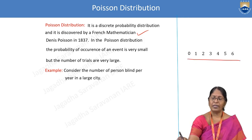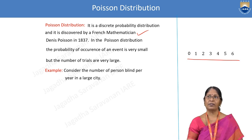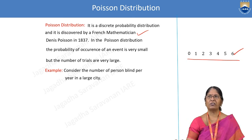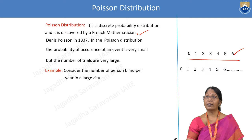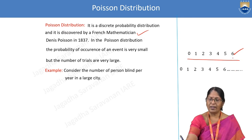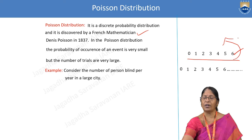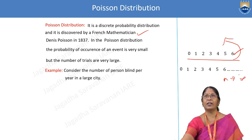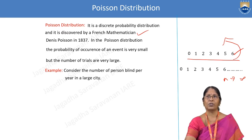Suppose a man is hitting a target six times — so n goes from 0 to 6, n is given and it is finite. Whereas in Poisson distribution, how many times it is thrown is not given; it tends to infinity. So when n is finite, it comes under binomial distribution. When n tends to infinity, it comes under Poisson distribution. That is the first difference we must know between binomial and Poisson distribution.